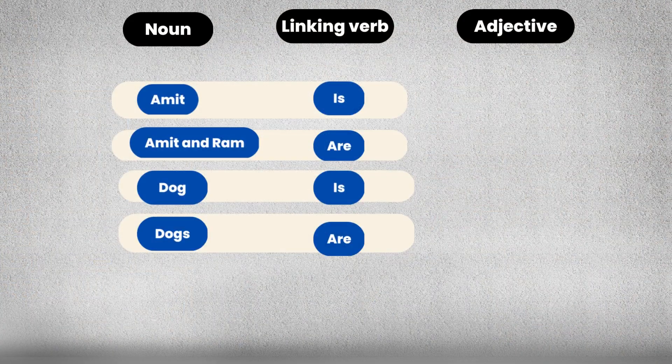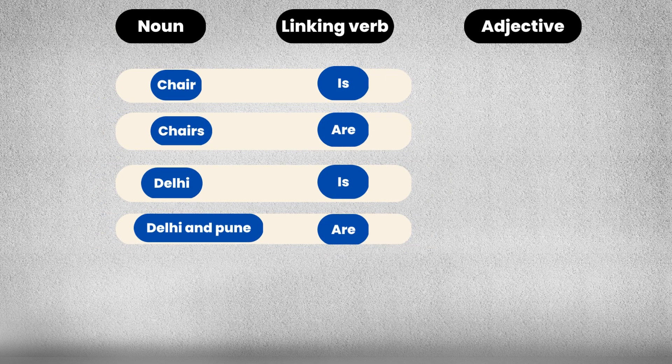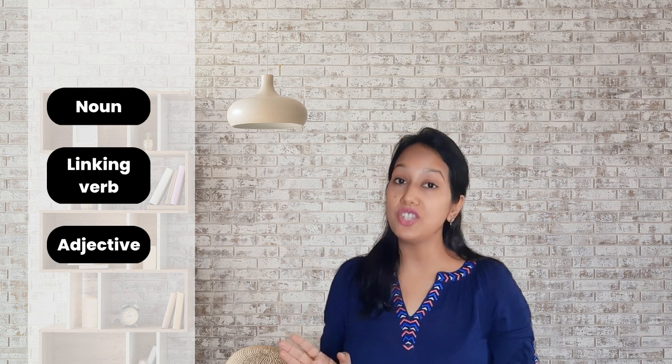Now let's connect noun and linking verb together: Amit is, Amit and Ram are, dog is, dogs are, chair is, chairs are, Delhi is, Delhi and Pune are. Now let's put noun, linking verb, and adjective together.